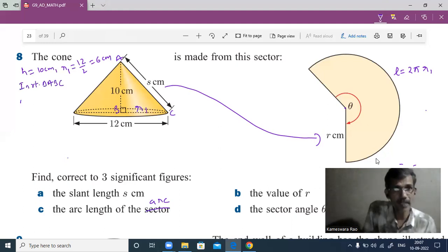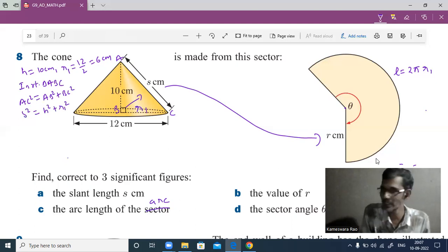Hypotenuse squared, AC squared, equals the sum of squares of the other two sides: AB squared plus BC squared. AC is the slant height of the cone, AB is the vertical height, and BC is the radius of the cone. The vertical height is 10, so 10 squared is 100. The radius is 6, so 6 squared is 36, giving 136.